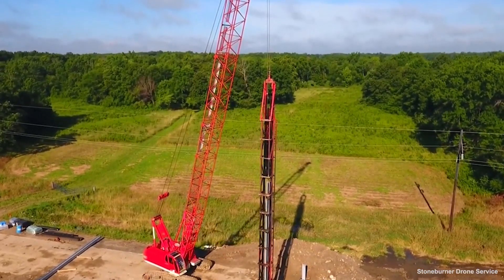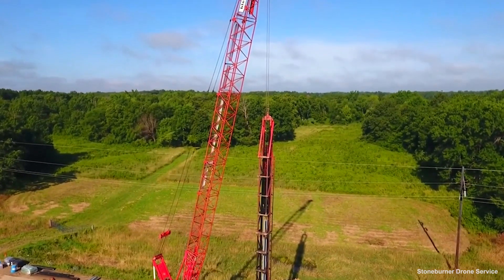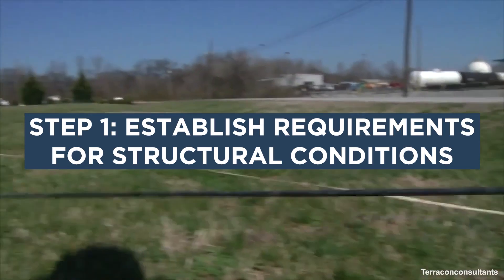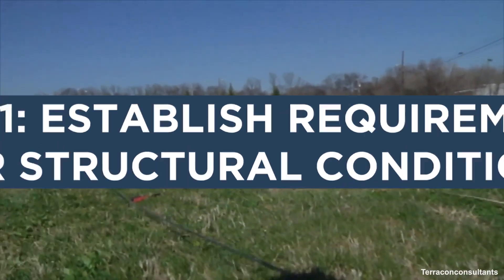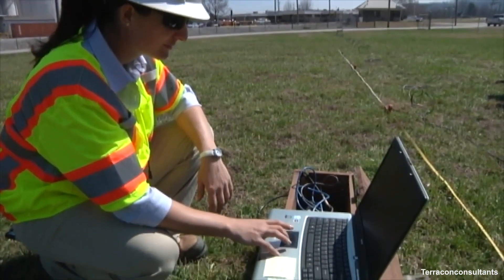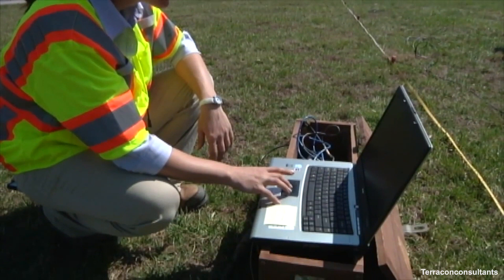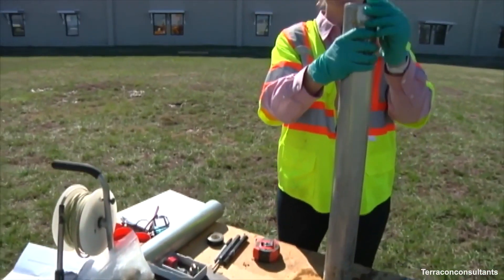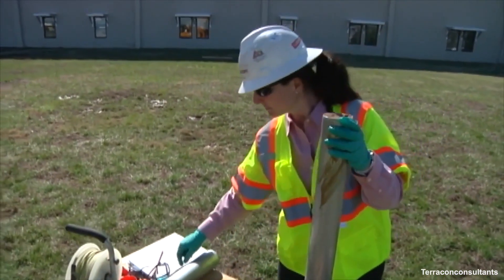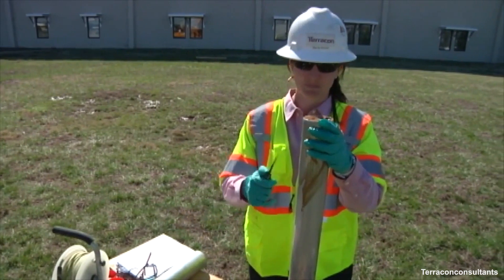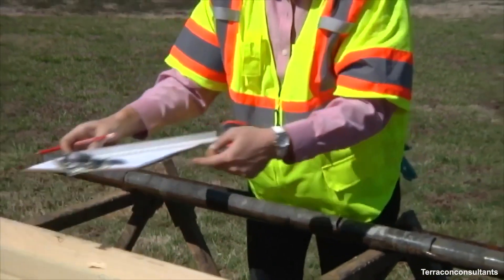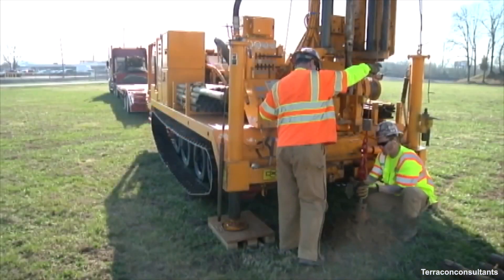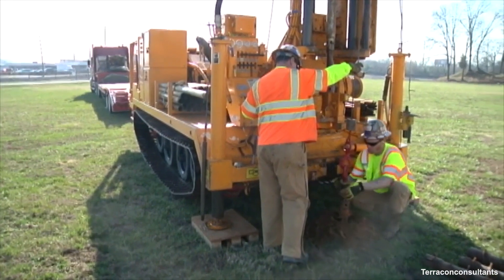There are generally 10 steps in the Driven Pile Design Process. Step 1: Establish requirements for structural conditions. You must first determine the general structure requirements, including site characterization. Site characterization is the process of developing an understanding of the geologic, hydrologic, and engineering properties that would impact site conditions. This might include the soil, rock, groundwater, and in many cases, man-modified conditions in the subsurface, like utilities and tunnels.